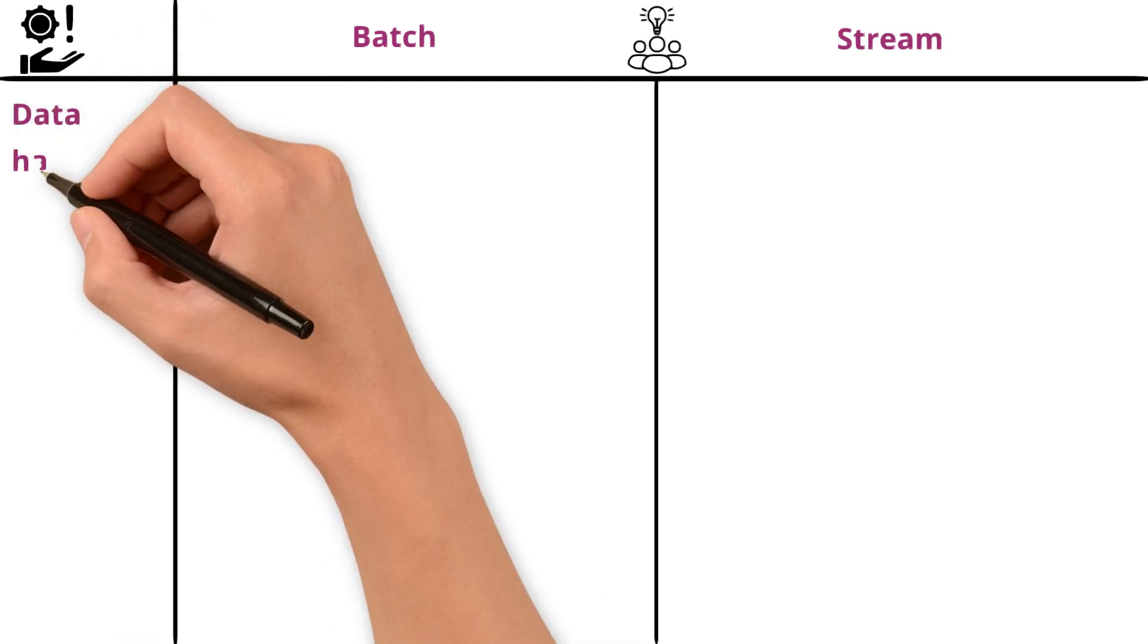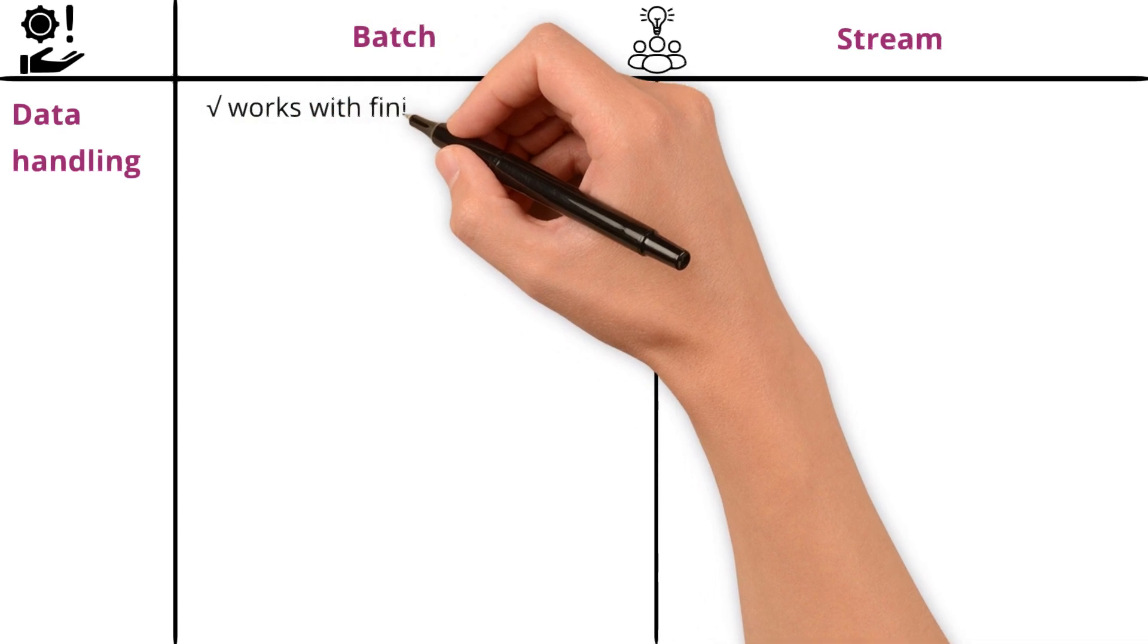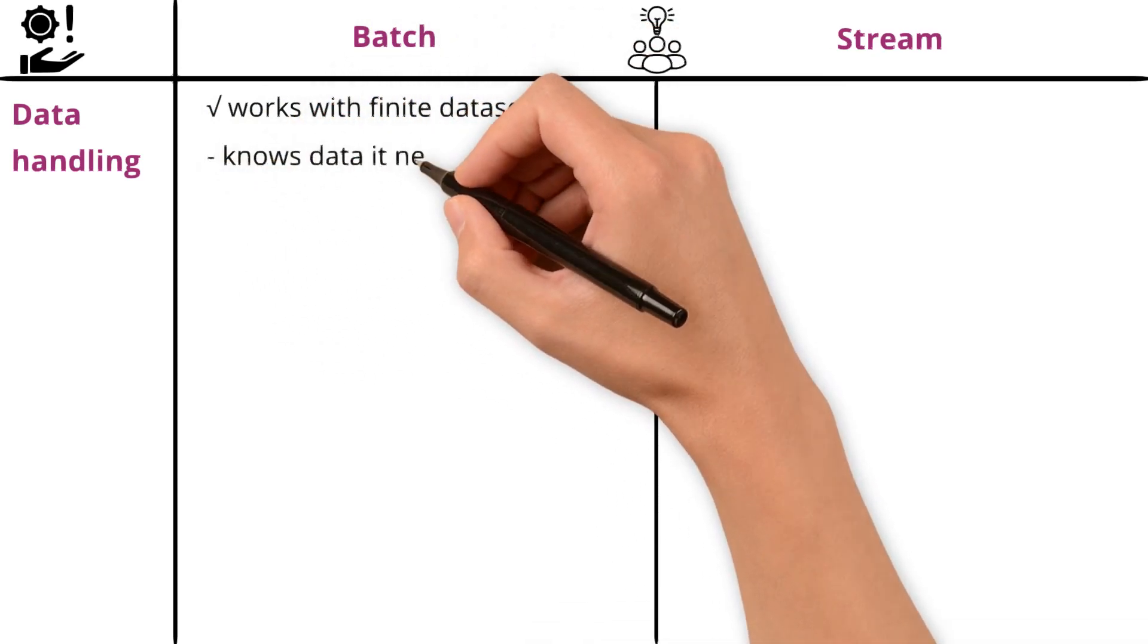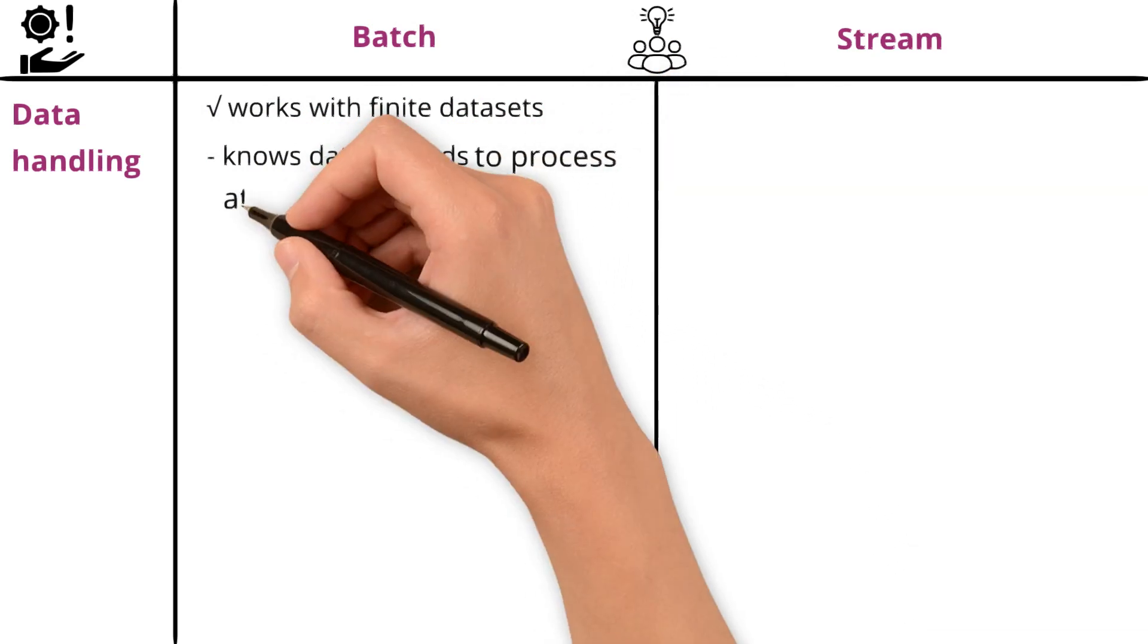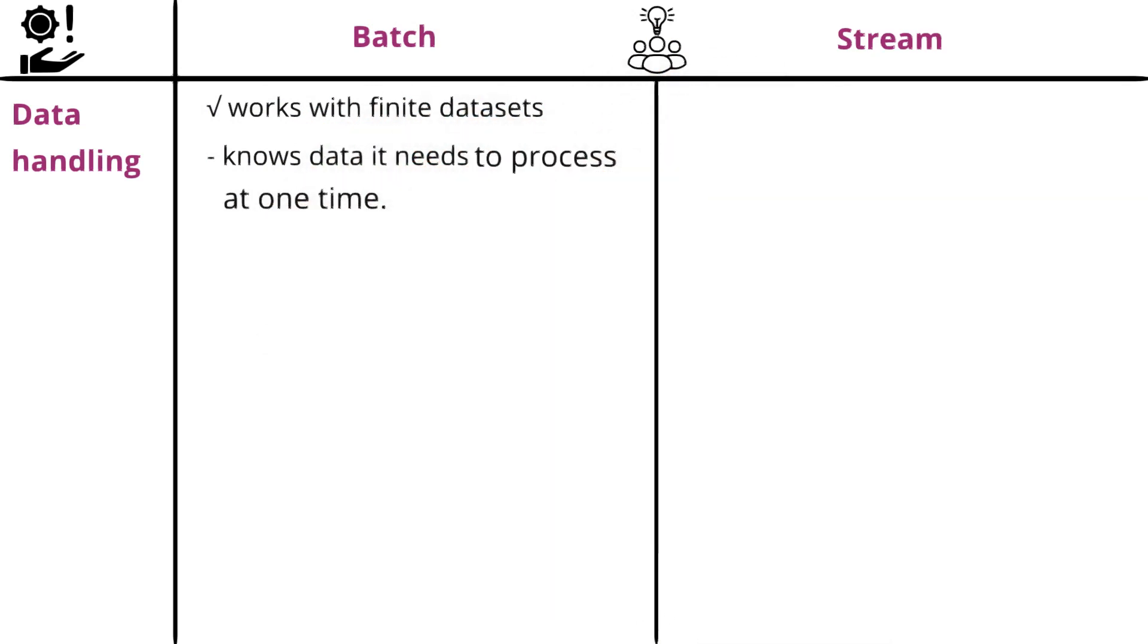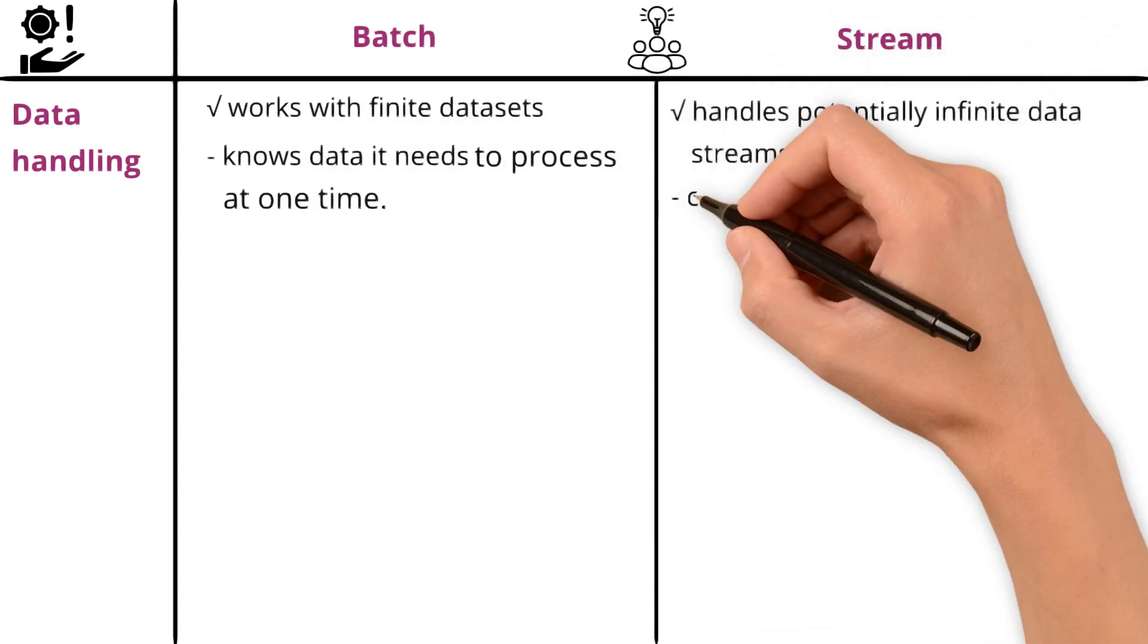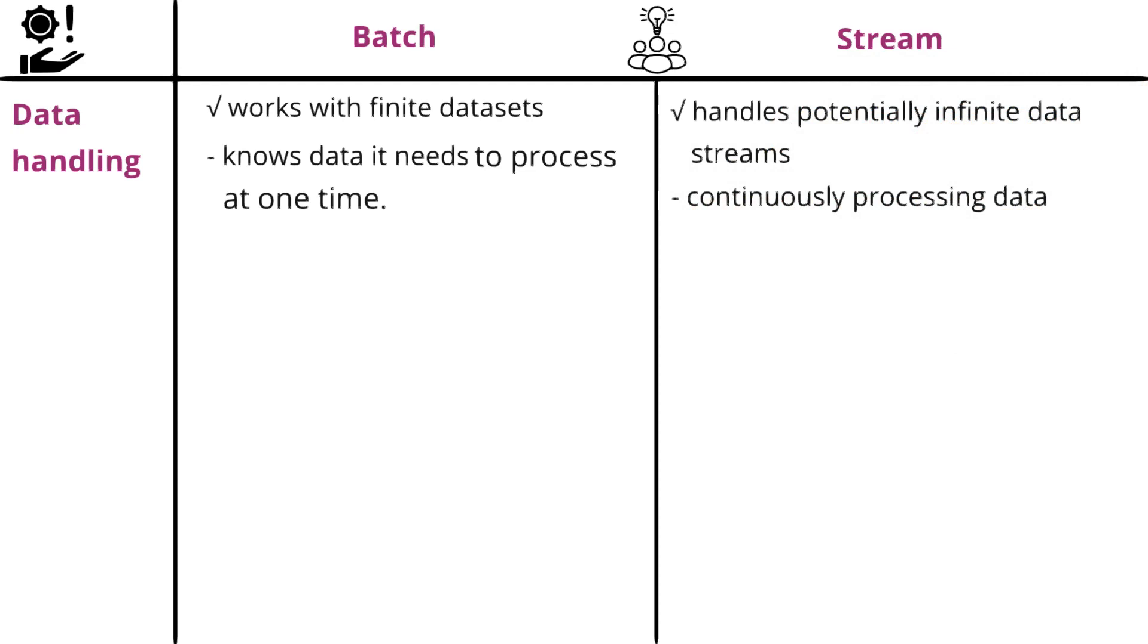Regarding data handling, batch processing works with finite datasets, meaning that the system knows how much data it needs to process at one time. In contrast, stream processing handles potentially infinite data streams continuously processing data as it arrives without waiting for all pieces of the batch to be available.